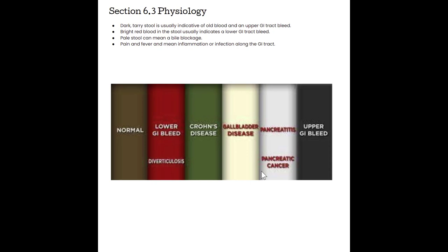Pale stool — sometimes called white or clay colored — is typically indicative of gallbladder disease. Remember, we normally expect stool to be brown. In the setting of gallbladder disease, if bile can't get into the duodenum, that color is no longer there and we'll see a much paler form of fecal matter. And while not very specific to the GI tract, doctors can run a complete blood count. A low amount of red blood cells could mean internal bleeding — leading to upper or lower GI bleed. An increased amount of white blood cells accompanied by abdominal pain or fever might indicate some sort of infection along the GI tract.